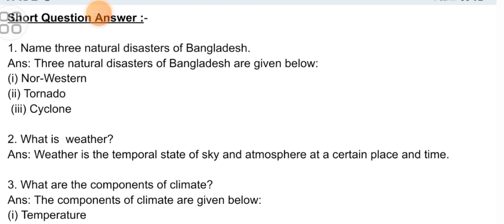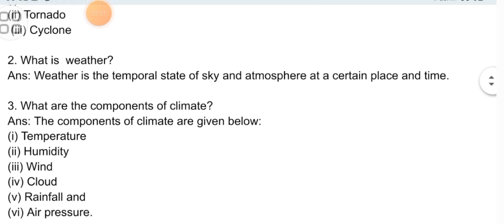Question 2: What is weather? Weather is the temporal state of sky and atmosphere at a certain place and time. Question 3: What are the components of climate? The components of climate are: temperature, humidity, wind, cloud, rainfall, and air pressure.